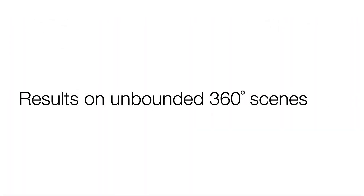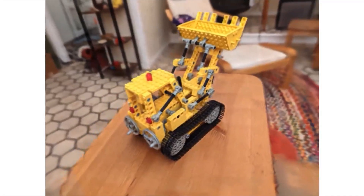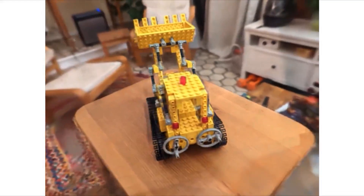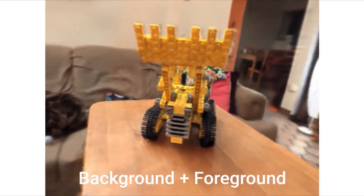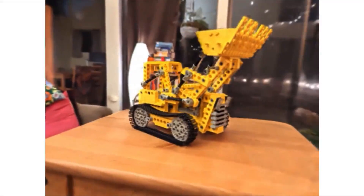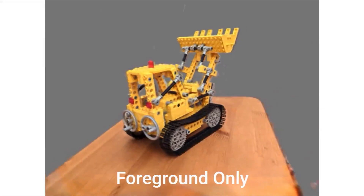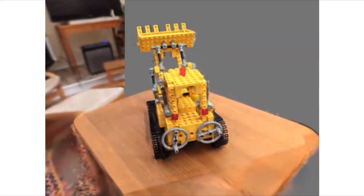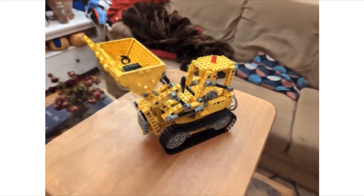We further demonstrate planoxels on 360-degree scenes by adding a multi-sphere image background model. In this scene, a physical Lego truck is placed on a table inside a real room. We can visualize the background MSI model and foreground planoxel grids separately, although they are optimized jointly. The background model is a stack of concentric voxel spheres, with trilinear interpolation both within each sphere and between neighboring spheres in depth. Planoxels optimize in under 30 minutes for 360-degree scenes, compared to about 4 days for NeRF++, a variant of NeRF that also supports unbounded scenes.